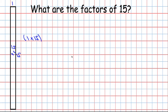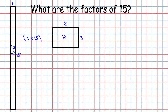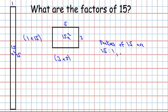Are there any other ways to make an area of 15? There is — maybe you've guessed it already. 3 times 5 will give us an area of 15. If this was 5 units long and 3 units wide, we'd have an area of 15 units squared. So 3 and 5 are factors of 15. Let's write them as a list: the factors of 15 in ascending order — from smallest to biggest — are 1, 3, 5, and 15.